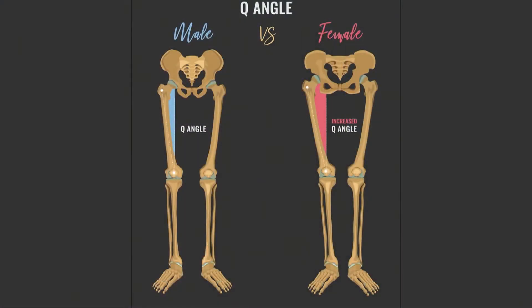One of the big issues that is different — and viewers may not have heard of this — is called the Q angle. We're going to talk more about that when we discuss knee injuries, but what is the Q angle? Here we have an example — walk us through this.